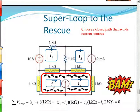What you do is create a path that avoids going through the independent current source, so you don't need to find the voltage across it. Taking this super path, we avoid that. As we go across, the term is I3 minus I1; across the next branch it's I4 minus I2 times 1; down here it's I4 times 1; all the way across; and finally I3 times 1 equals zero. That's a super loop.